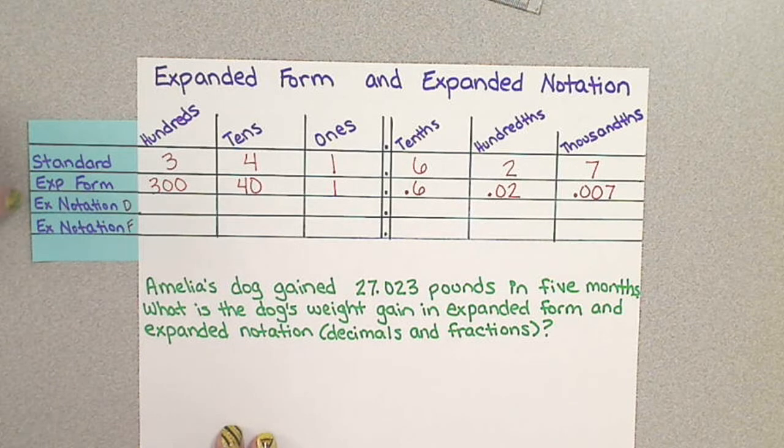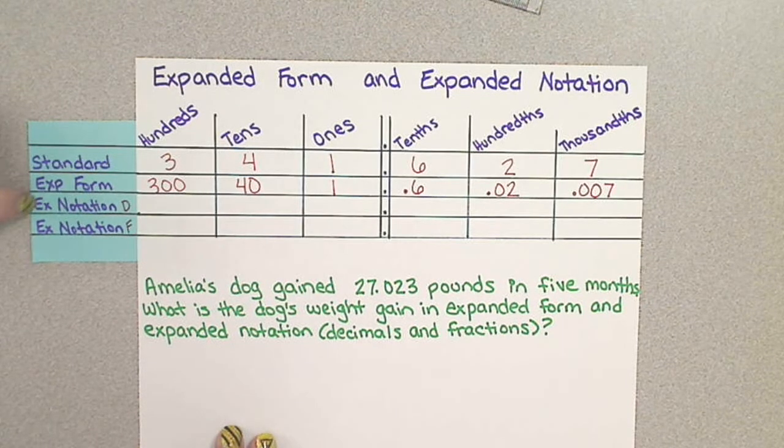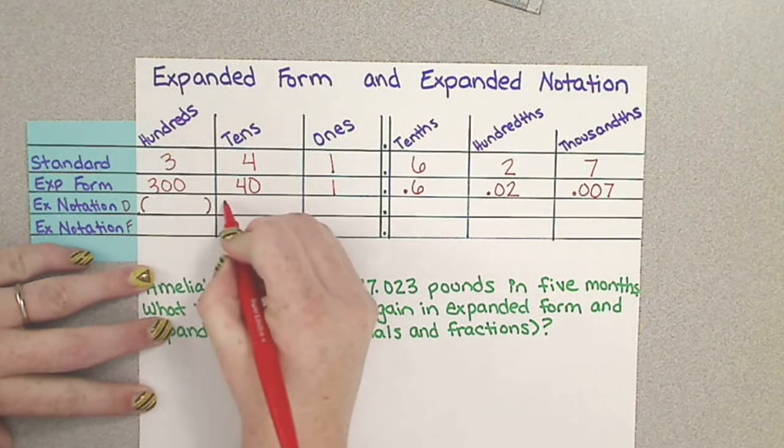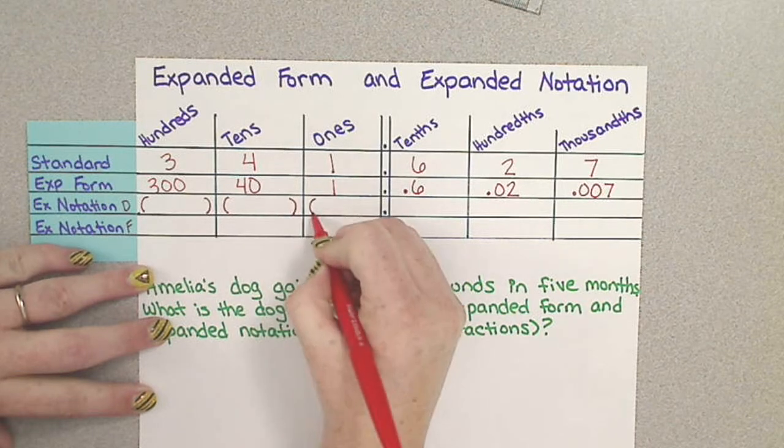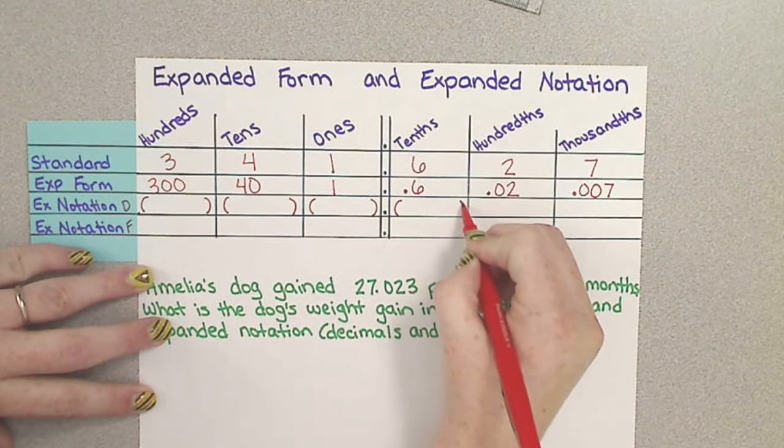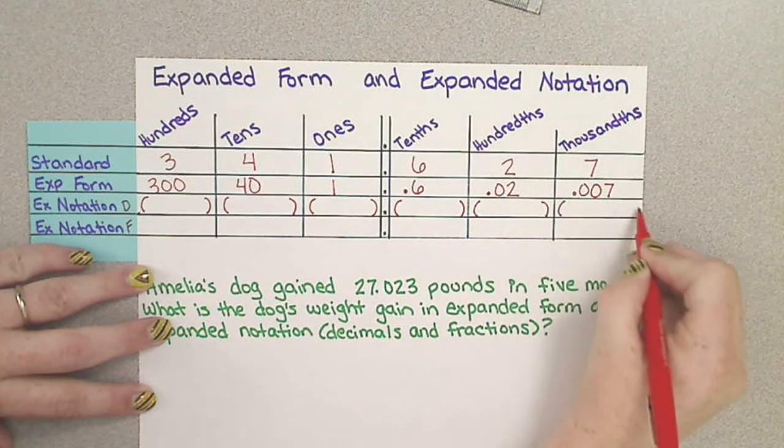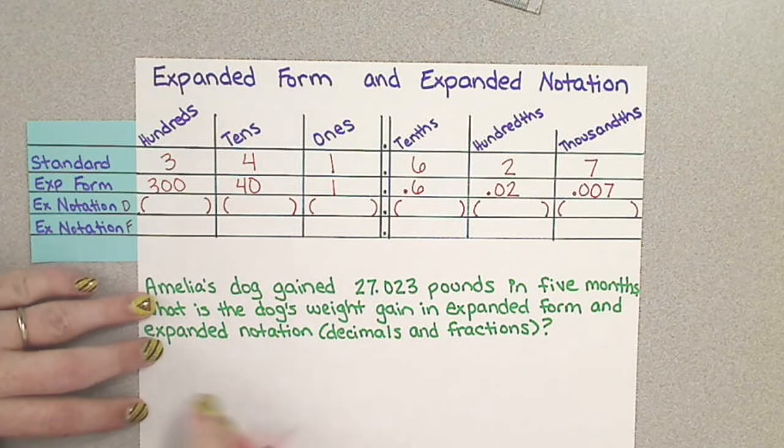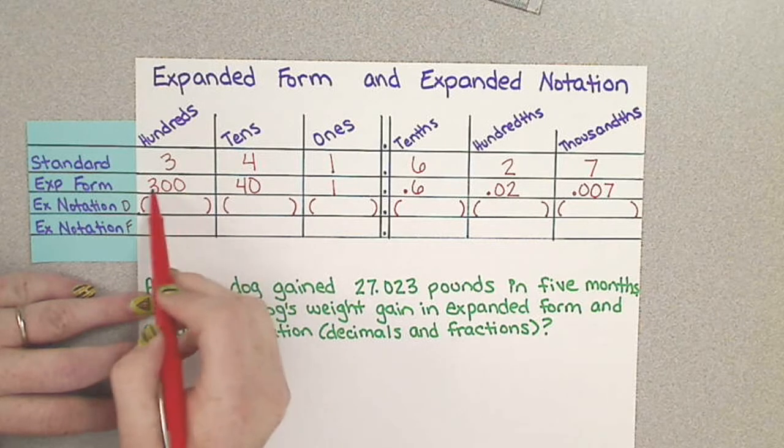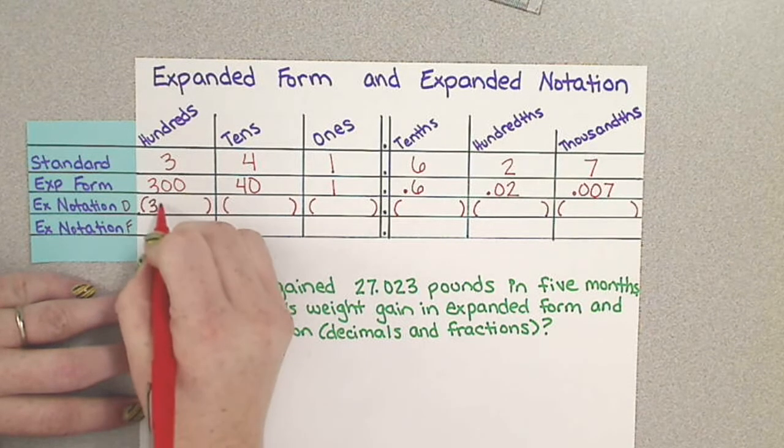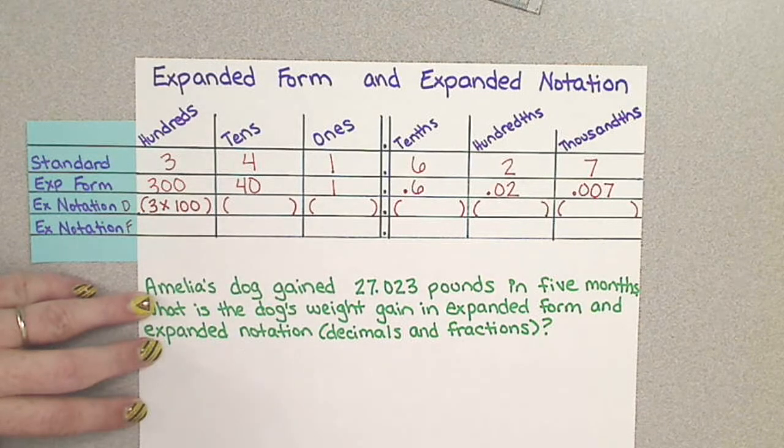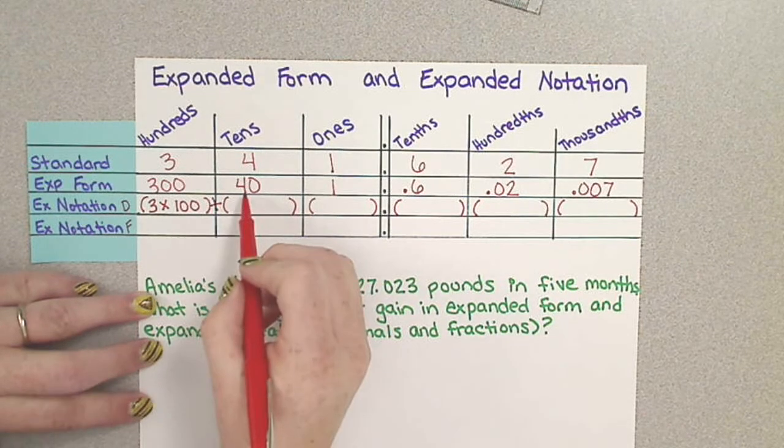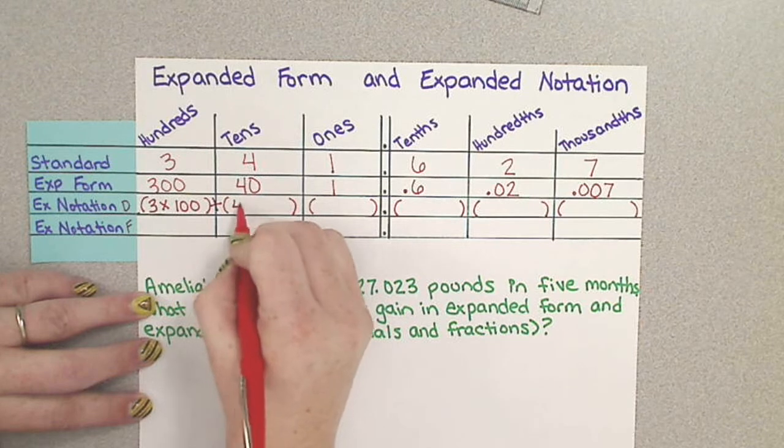So now we need to look at expanded notation with decimals. Expanded notation is when you are taking each of these pieces and you are creating an equation that equals your original number. So how did I find the value of this 3? Well, I multiplied 3 times 100. I'm going to need to add it to how I found the value of the 4, which I multiplied 4 times 10.